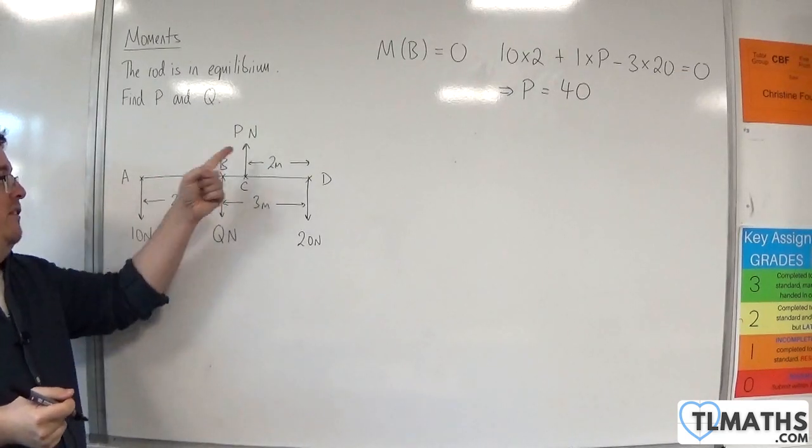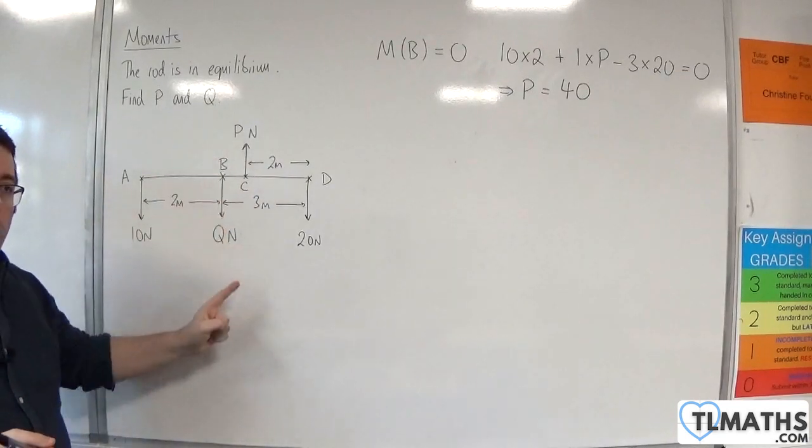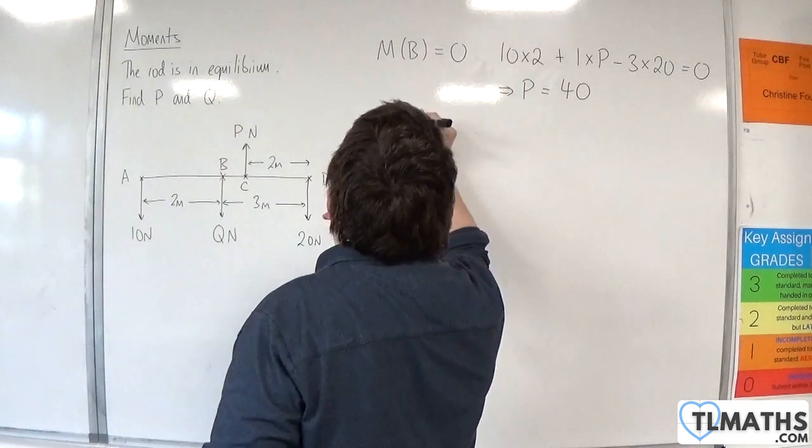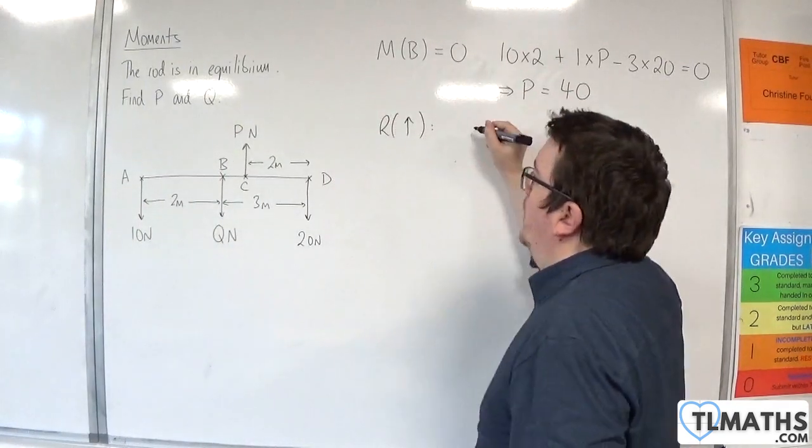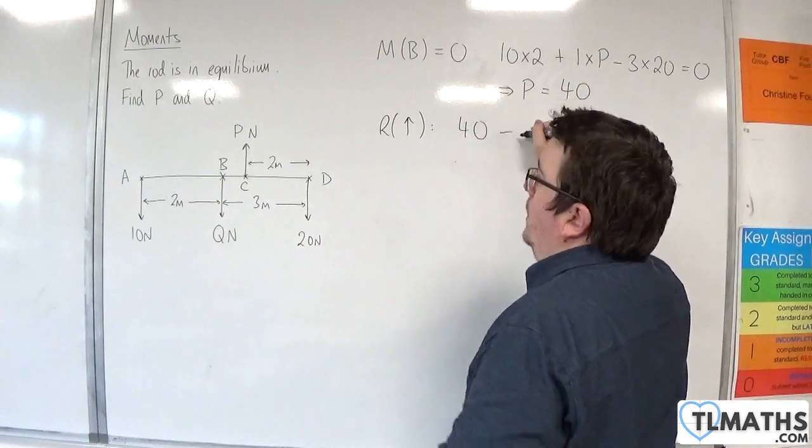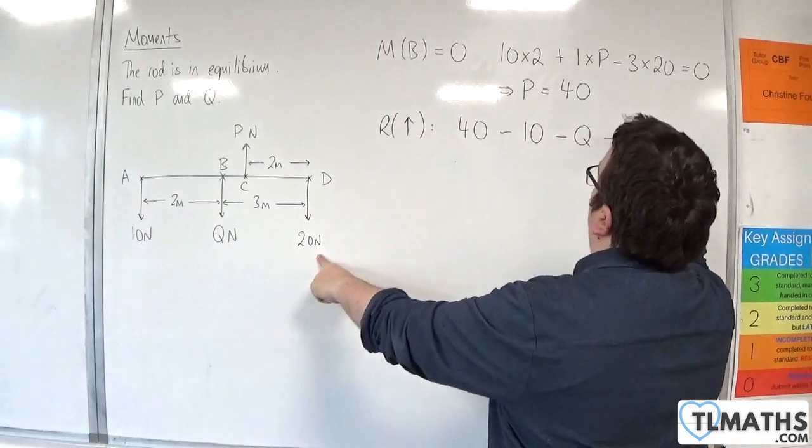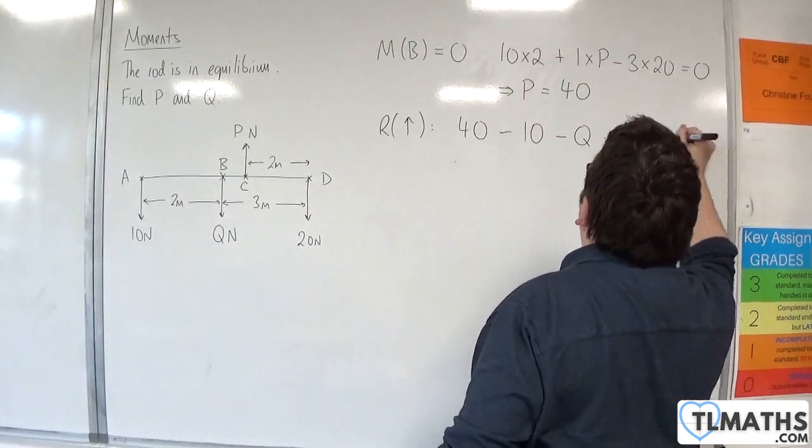Now that we have P, it makes sense to resolve vertically. I'm going to take upwards as positive, as I usually do. So we've just got P, which is 40, take away the 10, take away Q, take away 20 is equal to 0.